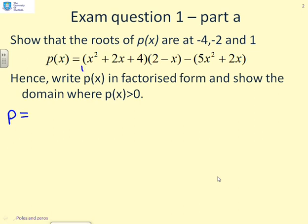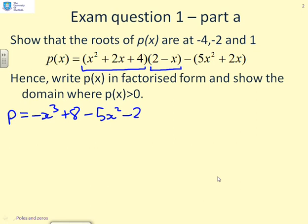I'm going to multiply out x squared plus 2x plus 4 onto 2 minus x. So I get minus x cubed — doing x squared times x. The x squared terms cancel because I get x squared times 2 and 2x times minus x. The x terms: I get 2x times 2 which is 4x minus 4x, so they cancel as well. So I get left with minus x cubed plus 8, and then minus 5x squared minus 2x.